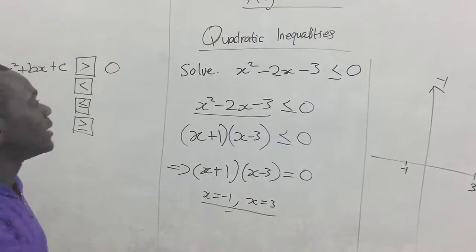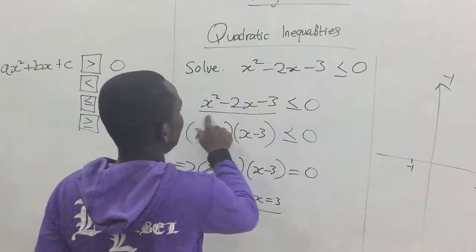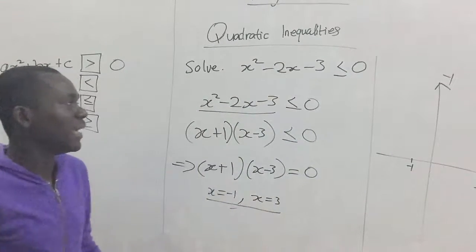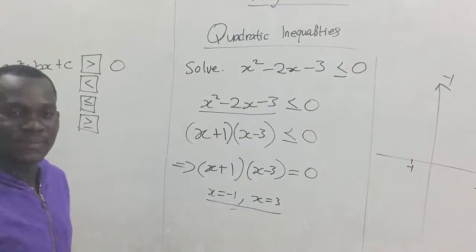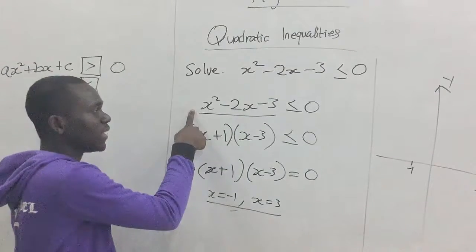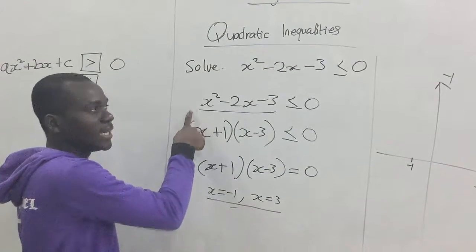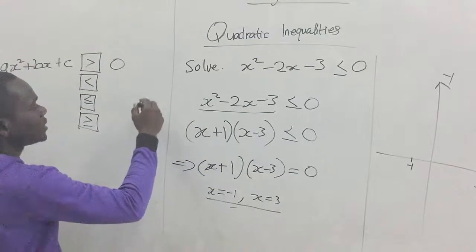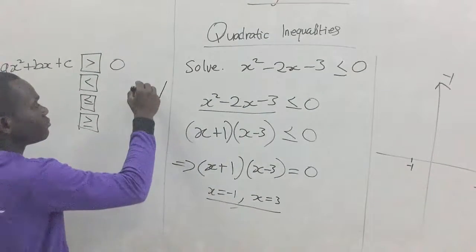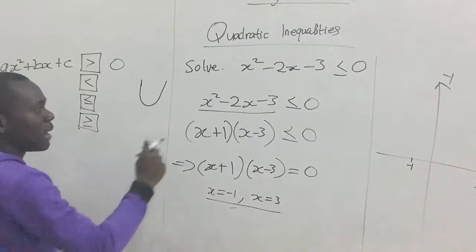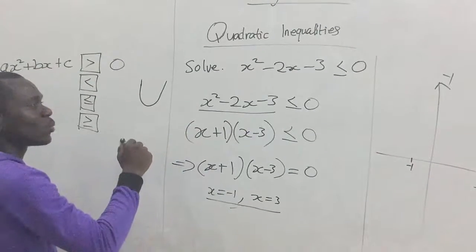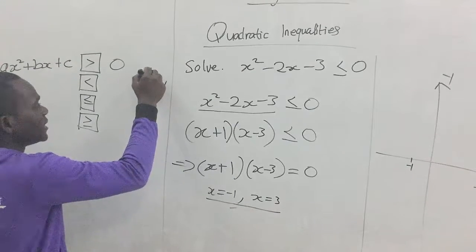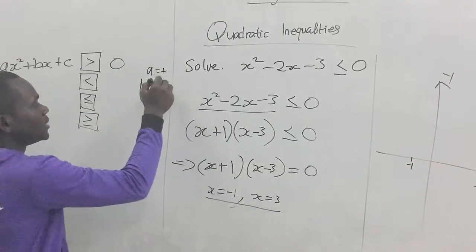Assuming you have this relation here, the coefficient of the x squared, is it positive or negative? If the coefficient of the x squared is positive, the graph of that function looks like this. That's a minimum quadratic graph. But when the coefficient of the x squared is negative, that's when the coefficient, let's say a, is positive.